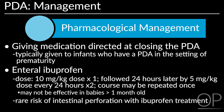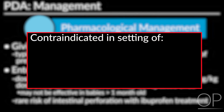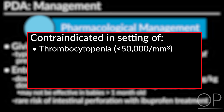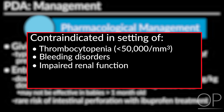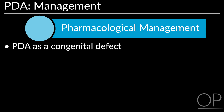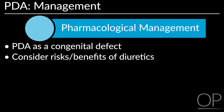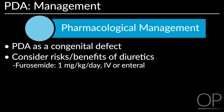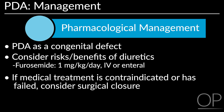There is a rare risk of intestinal perforation associated with ibuprofen treatment. Ibuprofen is contraindicated in settings of marked thrombocytopenia (less than 50,000), bleeding disorders, impaired renal function, and hyperbilirubinemia approaching exchange transfusion levels. Pharmacological management of PDA that is part of a broader congenital heart defect differs from treatment in the setting of prematurity. When managing PDA as a congenital defect, consider the risks and benefits of diuretics, specifically furosemide at a dose of 1 mg per kg per day, IV or enteral. If medical treatment is contraindicated or has failed, the PDA may need to be ligated surgically.